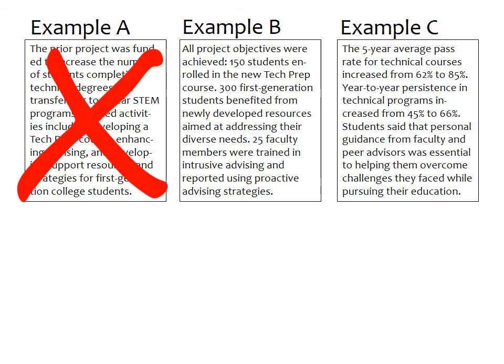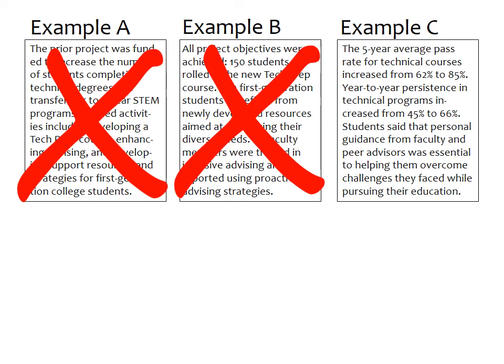In Example B, they only reported on their activities. You may have found the numbers to be compelling, but there isn't actually any evidence of what happened to the students as a result of these activities — this is not what you want to do in your proposal. In Example C, they addressed the question of 'so what.' It includes evidence of the changes that were brought about because of the project. So this is what you want to aim for.